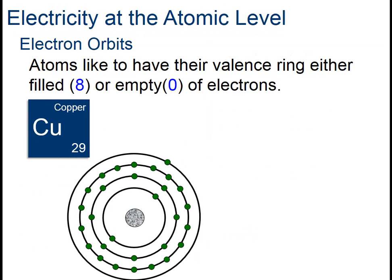Electricity can travel through something when its structure allows electrons to move through it easily. Metals, like copper, have free electrons that are not bound tightly to their parent atoms. These electrons flow freely throughout the structure of copper, enabling an electric current to flow.